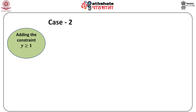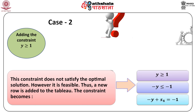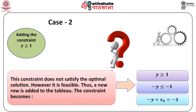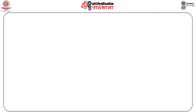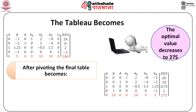Case 2: Adding the constraint y greater than or equal to 1. This constraint does not satisfy the optimal solution. However, it is feasible, so a new row is added to the tableau. The constraint becomes: y greater than or equal to 1, equivalently minus y less than or equal to minus 1, so minus y plus s4 equals minus 1. The tableau is updated as indicated, and after pivoting, the final tableau gives an optimal value that decreases to 275. Thus, by adding a constraint, the optimal value will never improve but can at most be the same.